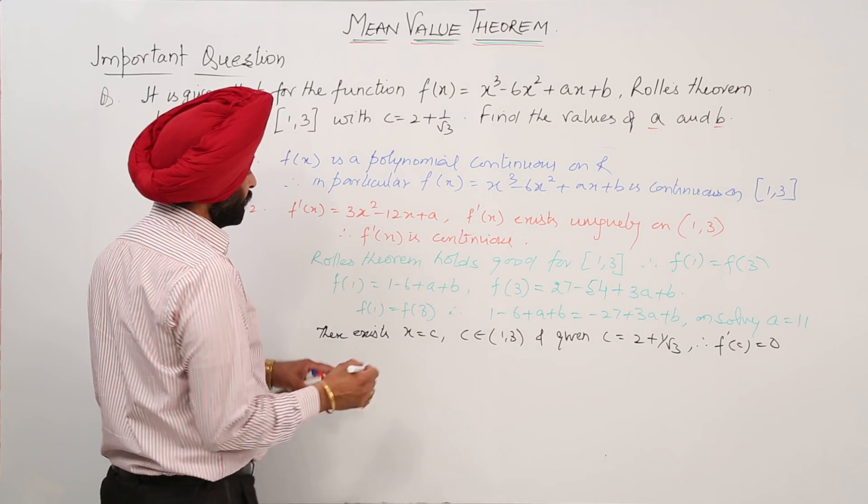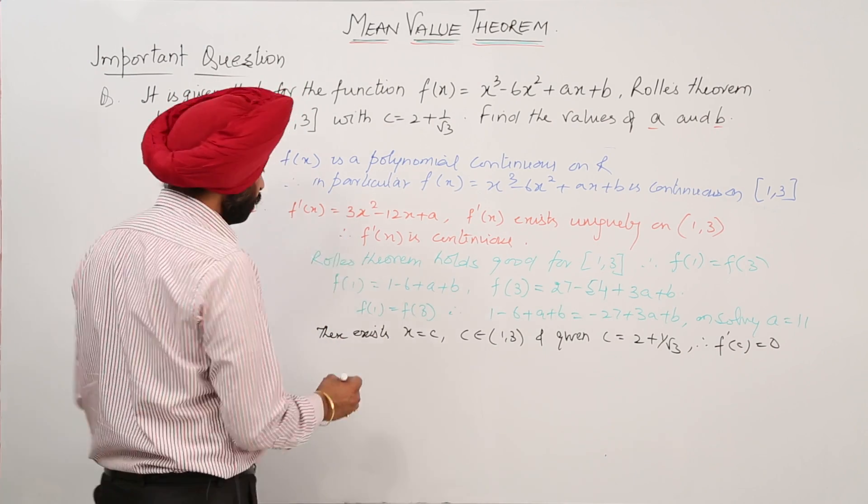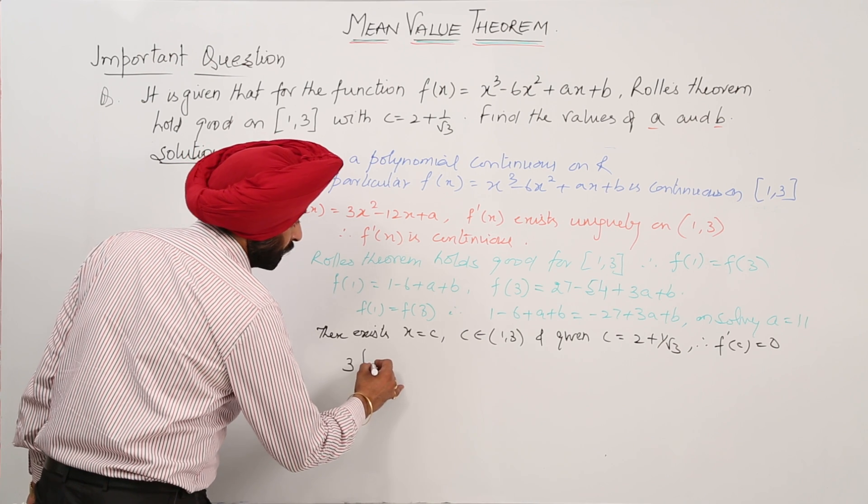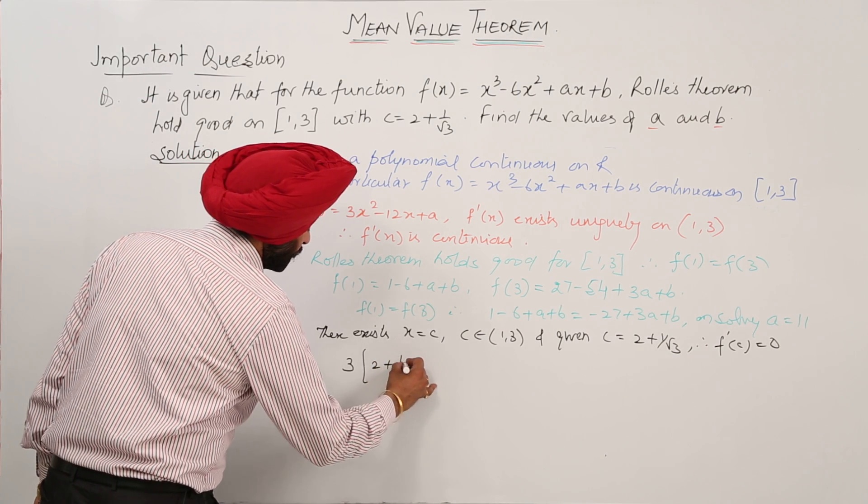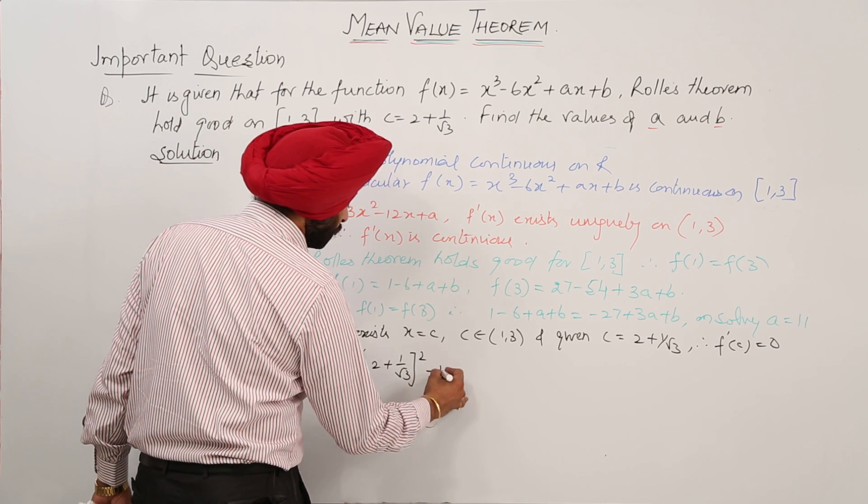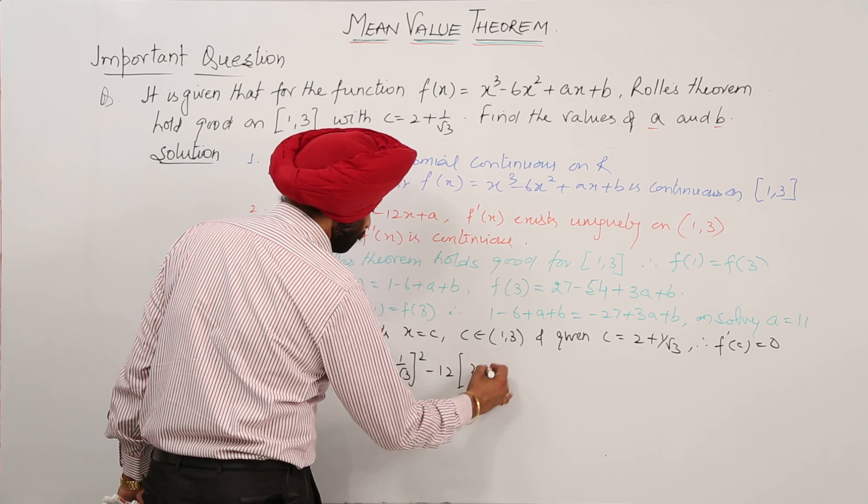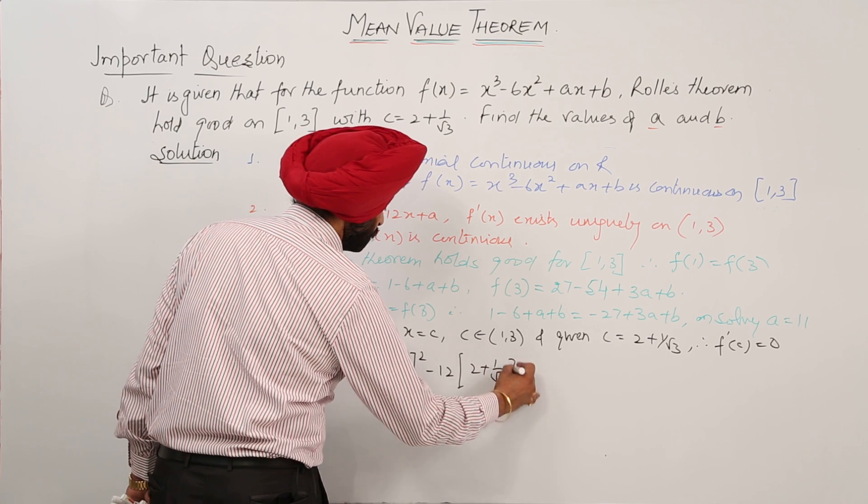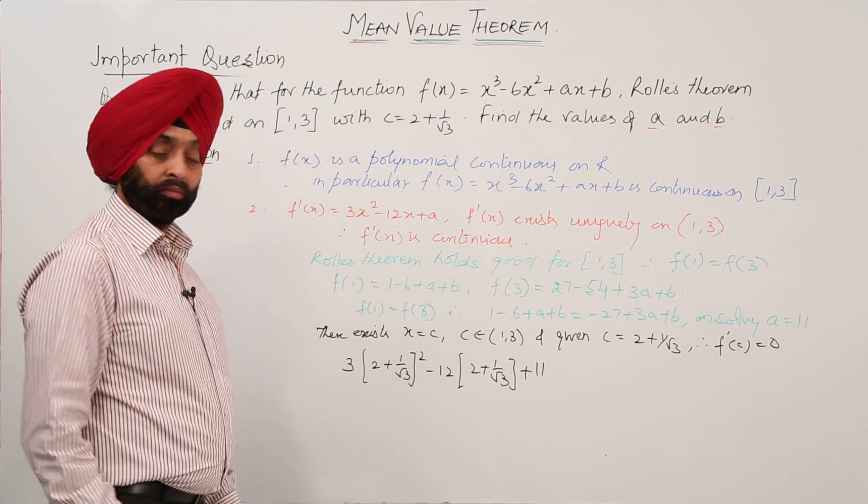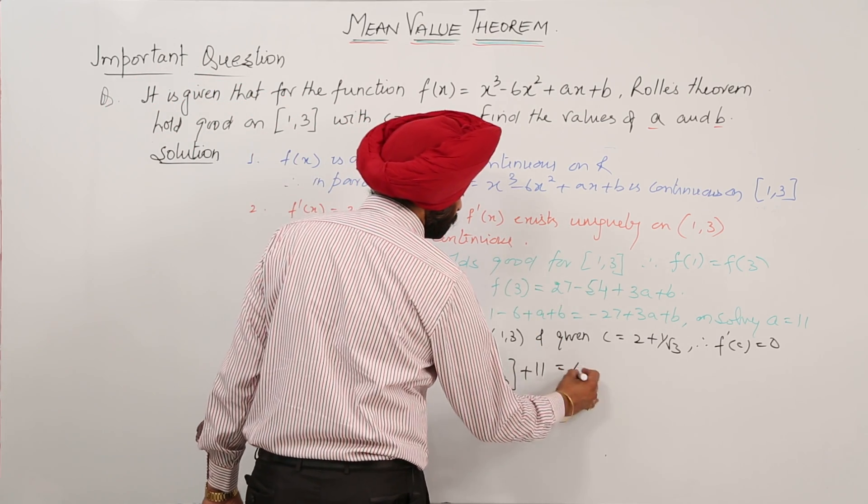And now f'(c), it means we have to put the value here. Now, 3(2 + 1/√3)² - 12(2 + 1/√3) + 11 = 0.